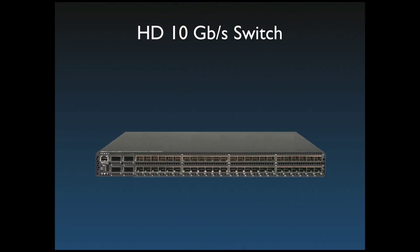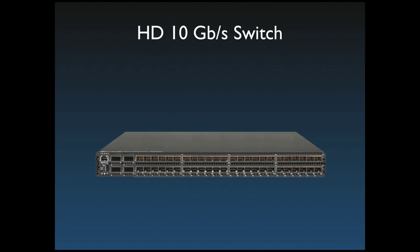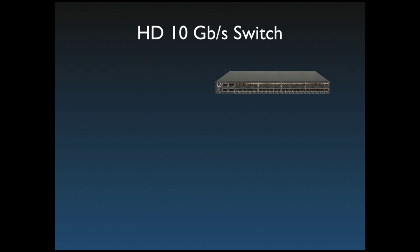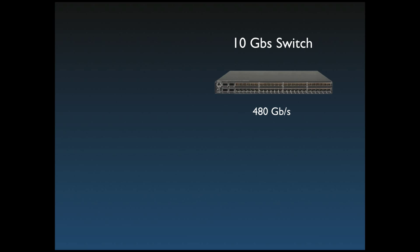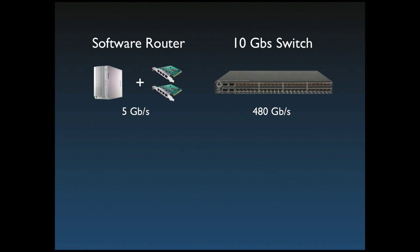What you see here is a fairly cheap modern 10 gigabit switch — a high-density 10 gigabit switch. It has 48 ports, each running at 10 gigabits per second, so the total switching capacity is around 480 gigabits per second. Compare this to a software router, which typically maxes out somewhere in the order of 5 gigabits per second. For some experiments, this factor of about 100 in performance doesn't matter, but for others, this difference in scale was a real problem.